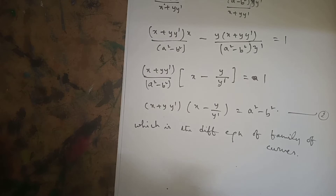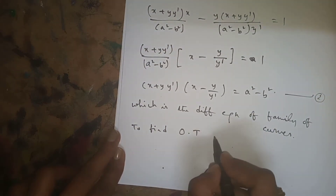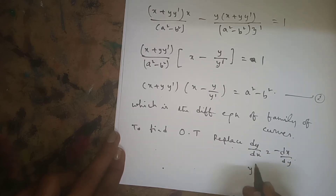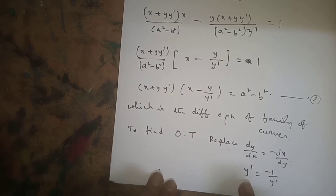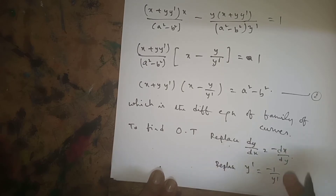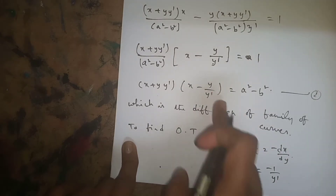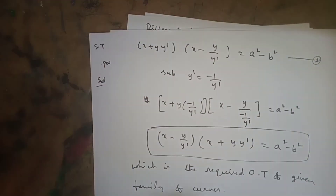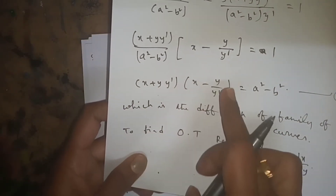Cross multiplying gives (x + y·y')(x - y/y') = a² - b², which is the differential equation of the given family of curves. This is equation 2. Now to find the orthogonal trajectories, we replace dy/dx with -dx/dy, which is the same as replacing y' with -1/y'.